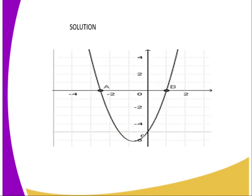The solutions to the equation come from where the graph cuts the x-axis. For example, if you have drawn a graph, the points marked A and B are where we get the solutions. You can see that those are the points where the graph cuts the x-axis.